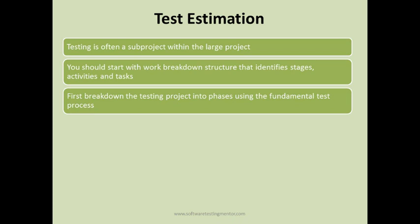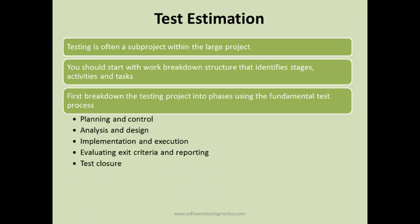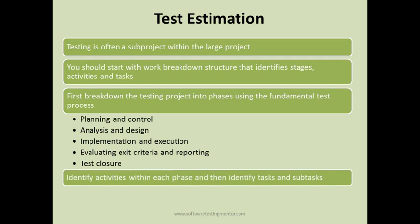First, break down your testing project into different phases using the fundamental test process. You can break down the phases in the testing cycle — for example: planning and control, analysis and design, implementation and execution, evaluating exit criteria and reporting, and test closure activity. Usually all testing cycles have these phases, so first identify what phases are there in your testing cycle.